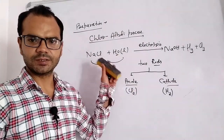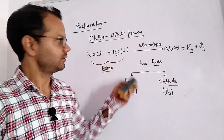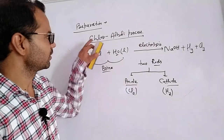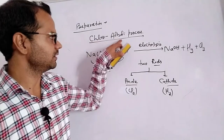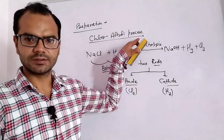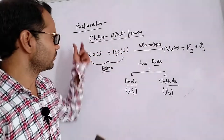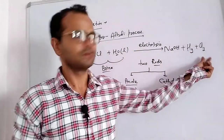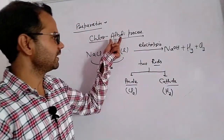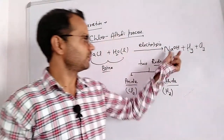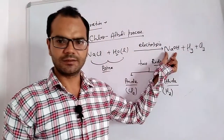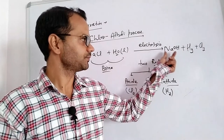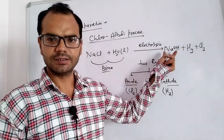This chlorine can be further used to form bleaching powder. This process is called the chlor-alkali process — 'chlor' because we obtain chlorine, and 'alkali' because we obtain sodium hydroxide, which is a strong base or alkali solution.